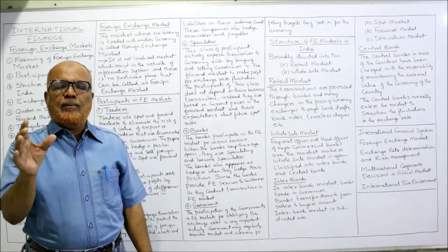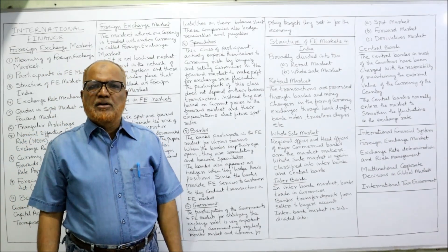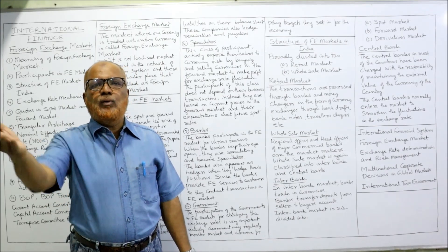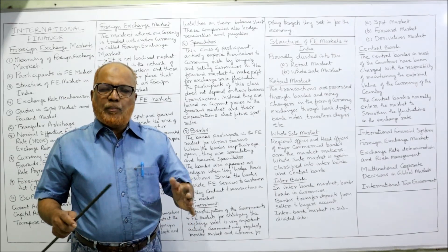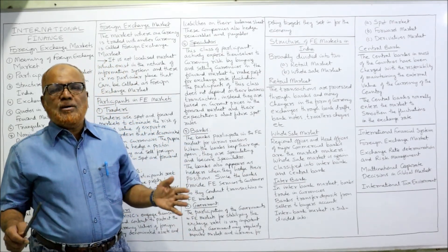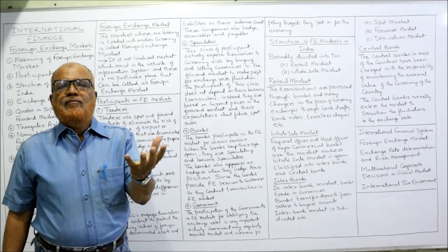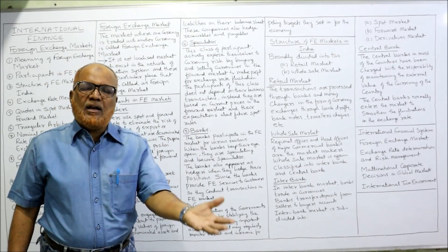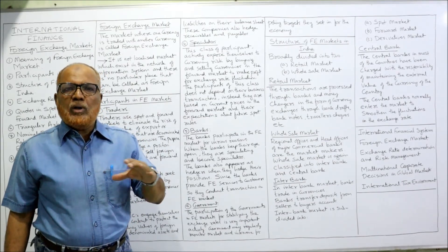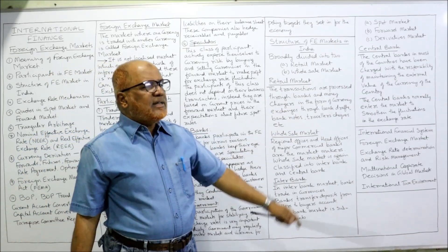The interbank market is subdivided into three: the spot market, the forward market, and the derivatives market. The spot market is where transactions are settled immediately at the spot rate. In the forward market, the transaction is agreed upon now but completed on a future date — two parties enter an agreement today that will be fulfilled later. The derivatives market is where derivatives are traded — financial instruments that derive their value from an underlying asset, such as futures, options, and swaps.